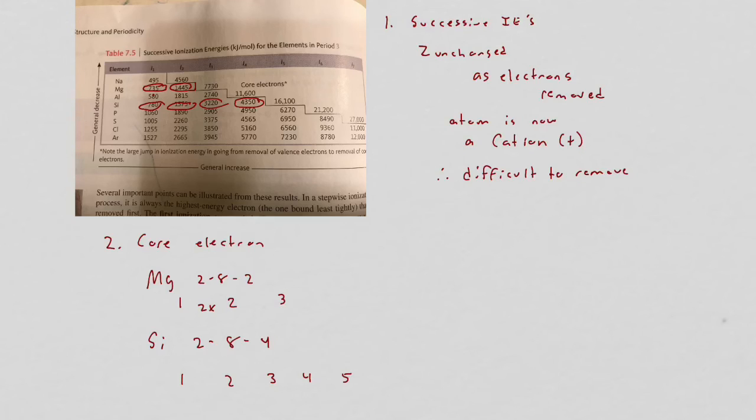You see the same thing here: everything is like 2x, 2x, doubling each time about. But then when you go from the fourth to the fifth, right here when you start dealing with core electrons, there's a monster jump.